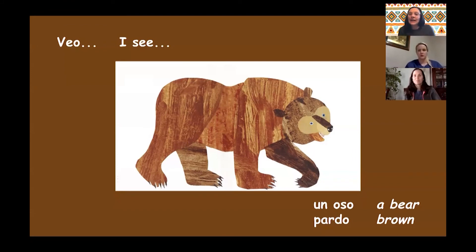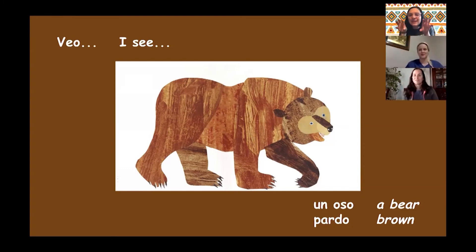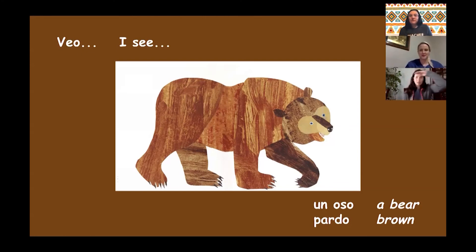Repite, por favor. Veo. Veo. Good. Veo means I see. And now, ¿qué animal es? What animal do you see here? This is a bear. Very good. So a bear in Spanish is oso. Oso. Muy bien. Repite, oso. Oso. Good. So it would be veo un oso. Veo un oso. Muy bien.